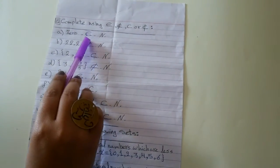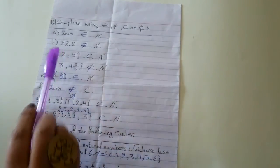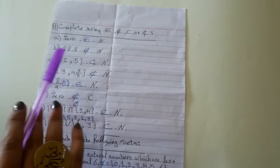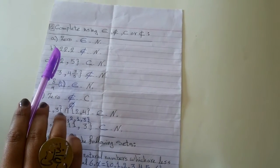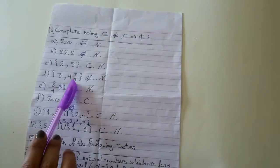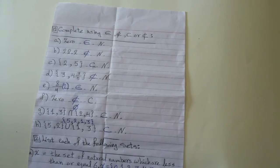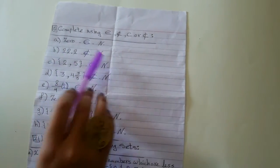Okay. Zero, element to N. Type 22.2. We know that all the natural numbers are whole numbers. We don't have decimal numbers or fraction number in the natural numbers. So, 22.2, not element to N.